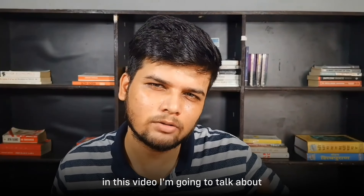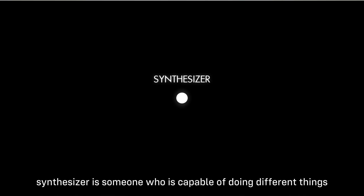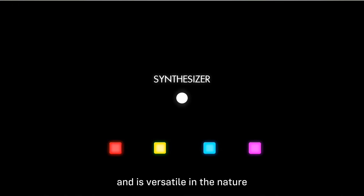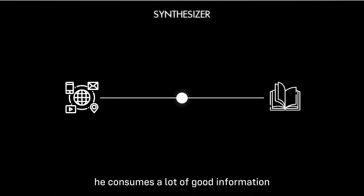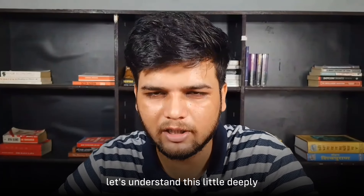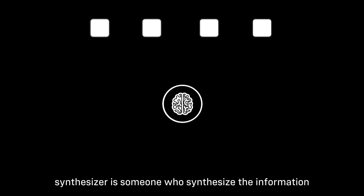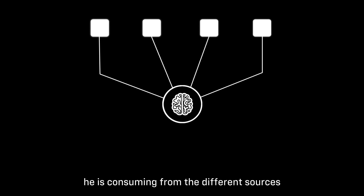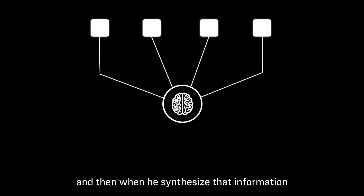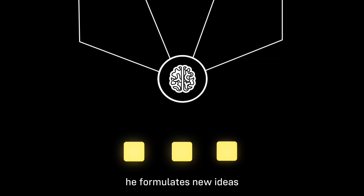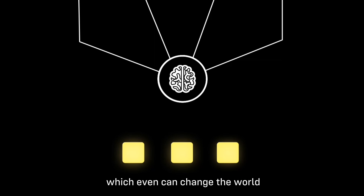In this video, I'm going to talk about how to become a synthesizer. A synthesizer is someone who is capable of doing different things and is versatile in nature. They have diverse interests, intellectual curiosity, they read a lot, and consume a lot of good information. A synthesizer synthesizes information from different sources, and then formulates new ideas which people would love — ideas that can even change the world.